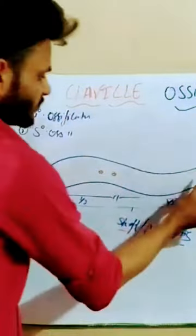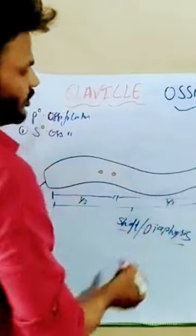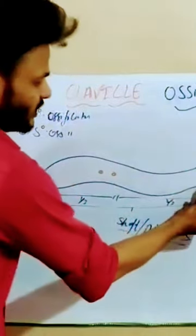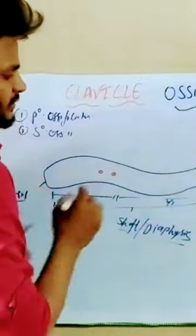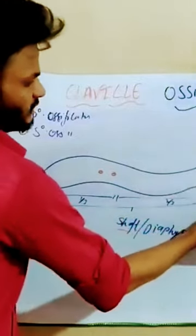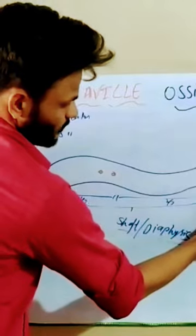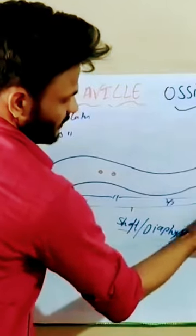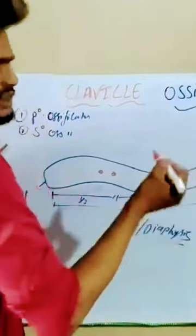And one secondary ossification center, which is on the medial most part of the clavicle — the epiphysis of the clavicle. This is the medial most part of the clavicle.